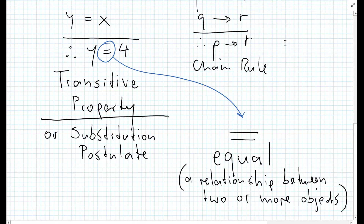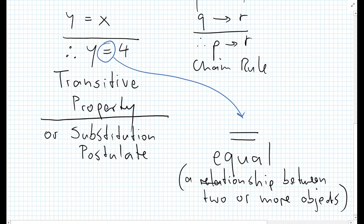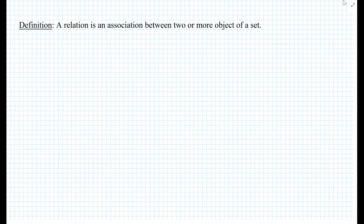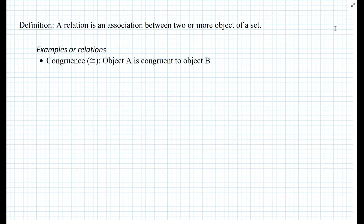Let's keep this in mind for today's lesson because we are going to need it when we develop the concept of equivalence relation. The equality somehow has some type of relation. So here we have a relation — that's what the equality sign means. So let me give you the definition of relation now. A relation is an association between two or more objects of a set. Here's an example of a relation: congruence, because here we're comparing an object A to another object B.